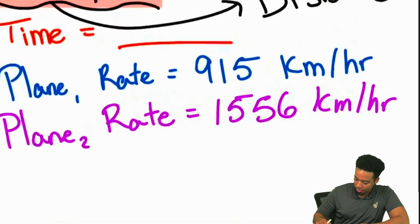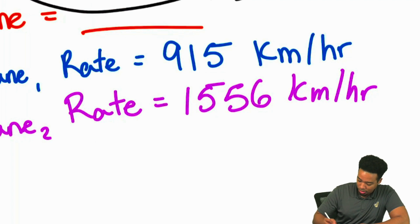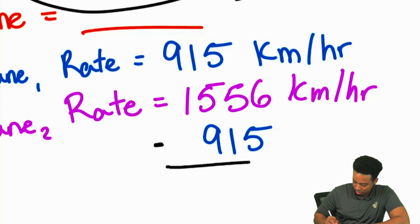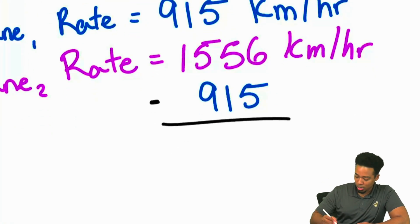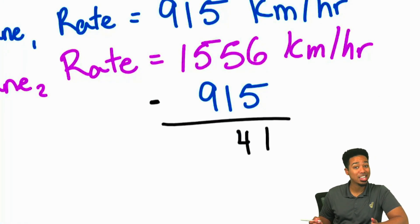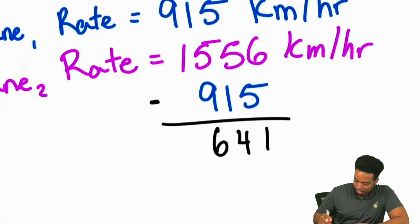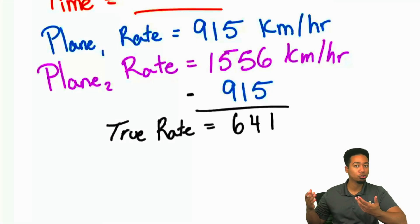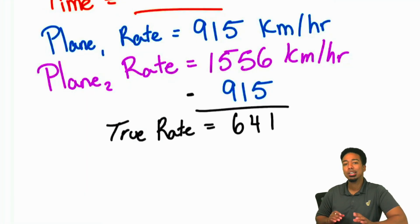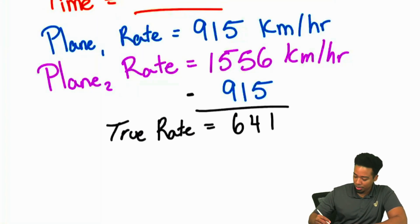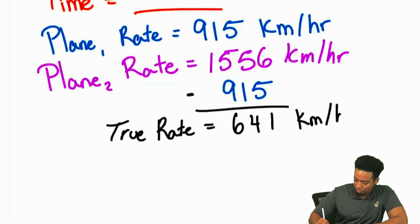With that said, let's go ahead and do that. We'll take this and duplicate it — move it right below and subtract. So if we subtract: 6 minus 5 is 1, 5 minus 1 is 4, and 15 minus 9 is 6. So this is your true rate — 641 kilometers per hour. That's how far apart these two planes are moving.